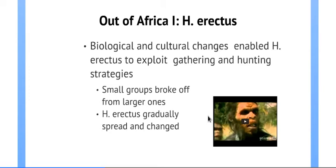Besides being great gatherers and hunters, Erectus inherited from Homo habilis the ability to create tools — shaping objects, breaking bones with large hammers they created. They were able to survive better in small groups, and it is understood that they could really work in small bands in a way that other great apes and primates were not able to. That's a big difference with Erectus.